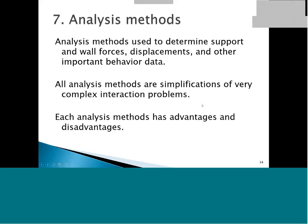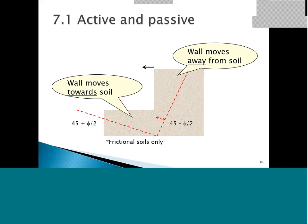Now we're going to look at our analysis methods. Our analysis methods are used to determine the support and wall forces, displacements, and other important behavior data. We have to recognize that all analysis methods are simplifications of a very complex soil-structure interaction problem, and that each method has its advantages and disadvantages. Looking at active and passive pressures — these are like failure states of the soil theoretically. In reality, if we've designed a wall properly, we'll be somewhere in between.